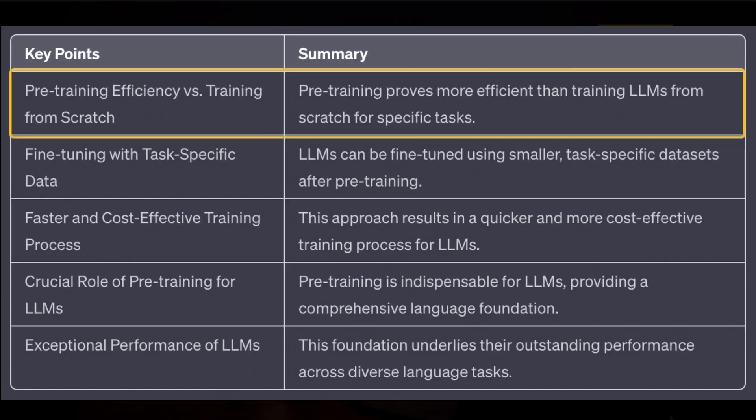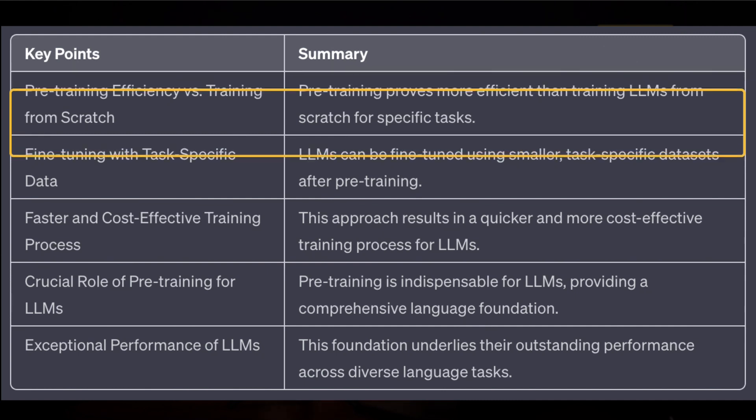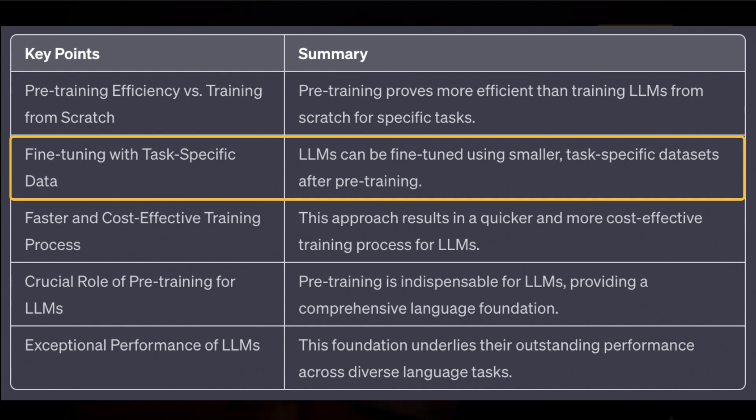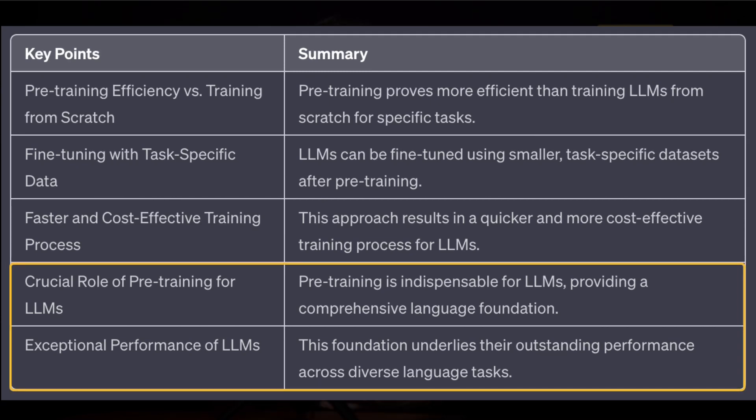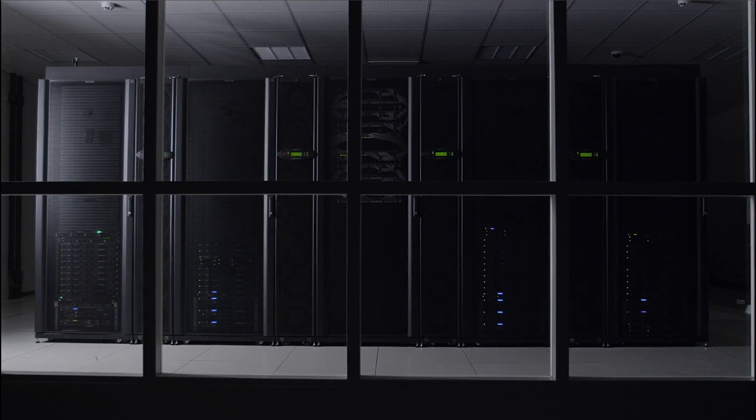Pre-training proves more efficient than training a model from scratch for each specific task. After pre-training, LLMs can be fine-tuned on smaller, task-specific datasets, resulting in a faster and more cost-effective training process. Pre-training is indispensable for LLMs as it equips them with a comprehensive understanding of language, forming the basis for their exceptional performance across a wide range of tasks. It's worth noting that pre-training LLMs requires substantial computing power, memory, and storage due to their size and complexity. Advanced hardware and software tools are necessary to handle the vast datasets, and pre-training demands powerful computers and efficient techniques to achieve superior language understanding.